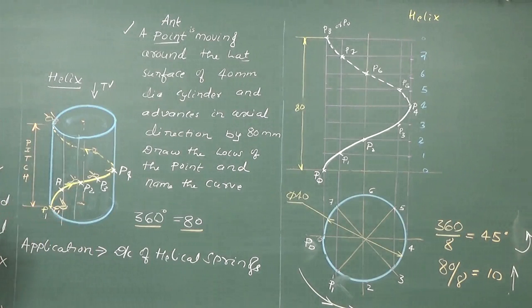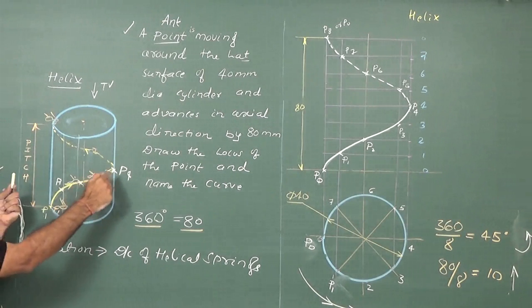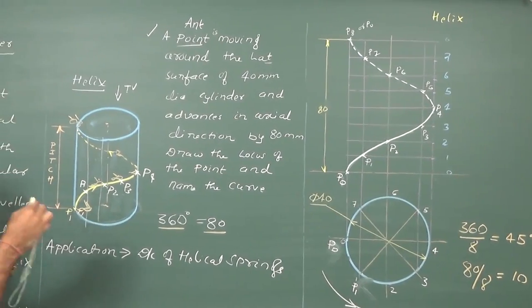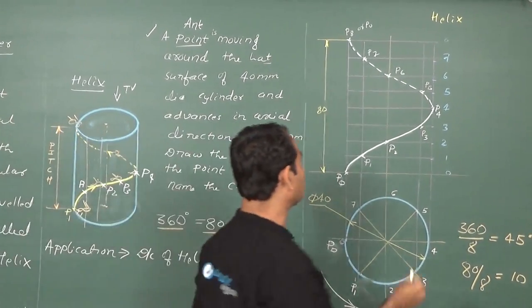The representation is, if something is visible in drawing, you are showing by a dark line. If something is not visible to the observer, if I stand here, when the ant moves on the back side of the cylinder, it cannot be seen, that path is shown by dotted line.